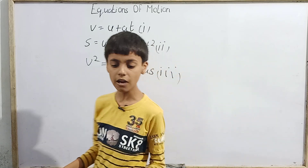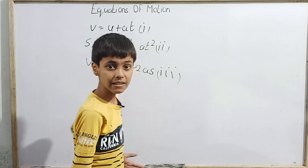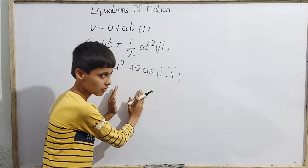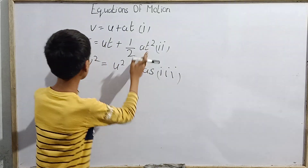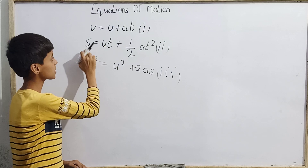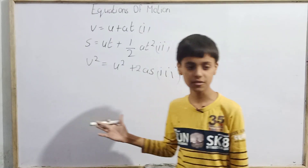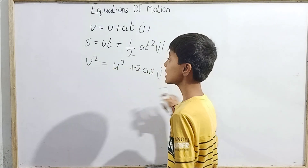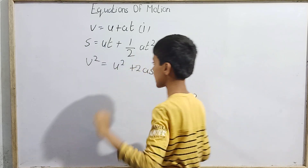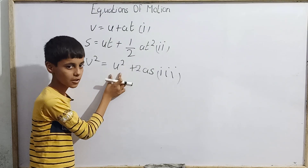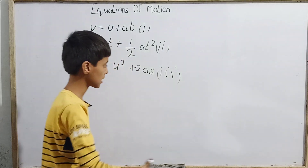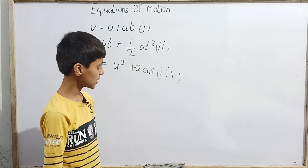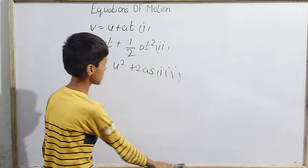In one-dimensional motion, the distance covered equals the displacement covered by the particle. So through this formula, we can write that the distance covered by the particle equals the displacement, which is ut plus half at squared. For the third equation, v squared equals u squared plus 2as — the s here always refers to displacement, not distance. Now let me erase this and derive the equations using the method of integration.